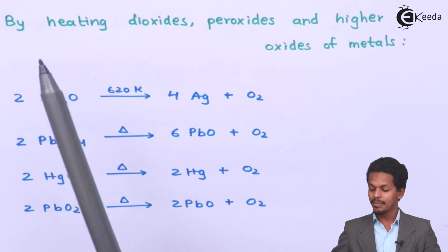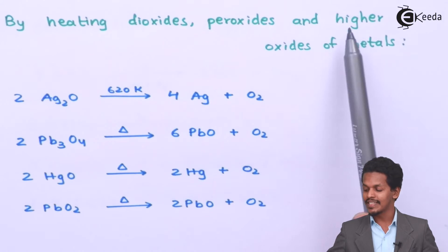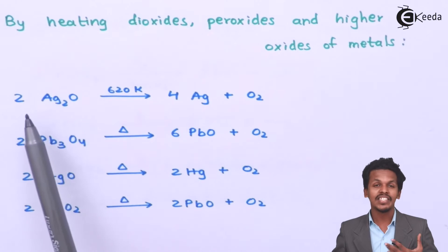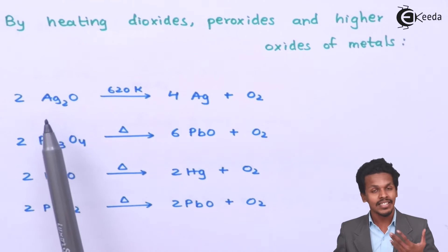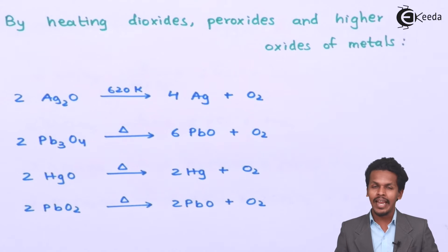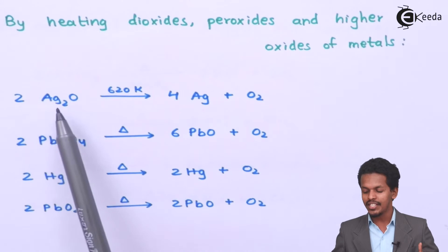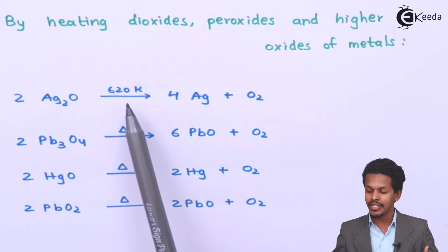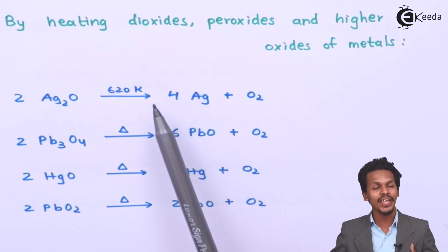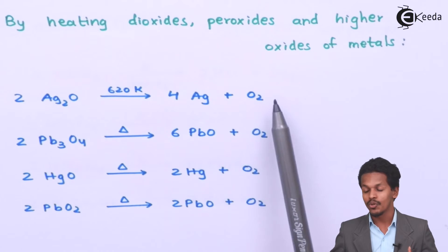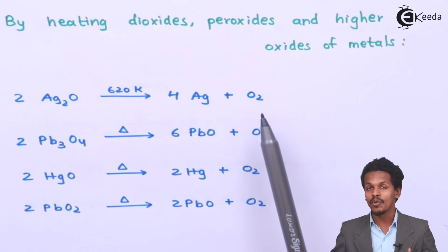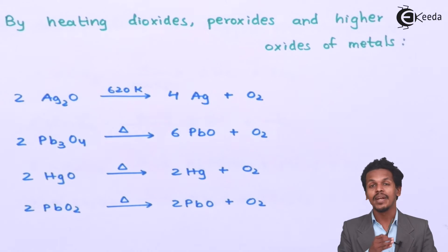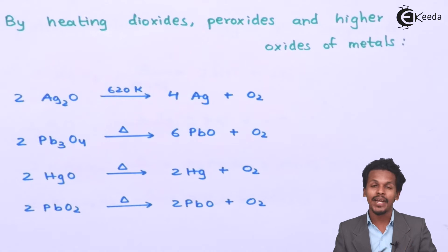The next reaction is by heating dioxides, peroxides, and higher oxides of metals. For example, if 2 moles of Ag2O, silver oxide, undergoes decomposition, it forms 4 moles of Ag along with O2. In this case oxygen is obtained as a byproduct. We can also prepare oxygen by decomposing metal oxides.